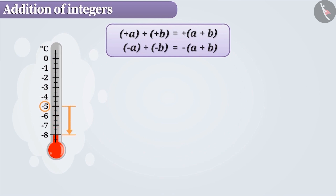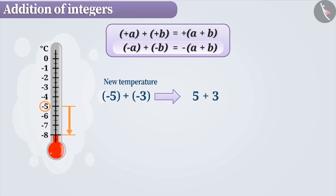Similarly, if the temperature is minus 5 degrees centigrade and there is a change of minus 3 degrees centigrade in the temperature, then the new temperature can be found by finding the value of minus 5 plus minus 3. Here, we are adding two negative integers having the same sign. Therefore, in this case also, we will add them without a sign. Later, the minus sign is included in the result 8, that is, it is expressed as minus 8.